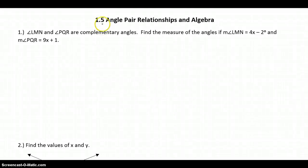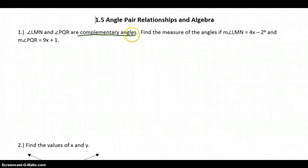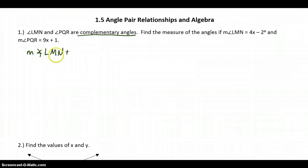In the second part of 1.5, we're going to use the same angle pair relationships, but this time add in algebra. If we look at example 1, we have angle LMN and angle PQR, and we're told that those angles are complementary. We know that complementary angles are angles whose measures sum to 90 degrees. So we can say that the measure of angle LMN plus the measure of angle PQR equals 90 degrees.